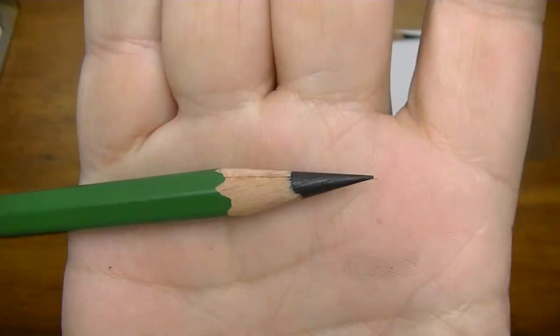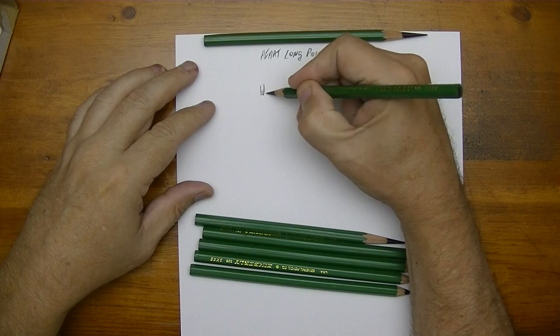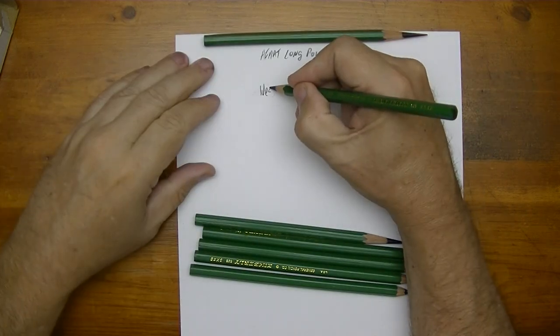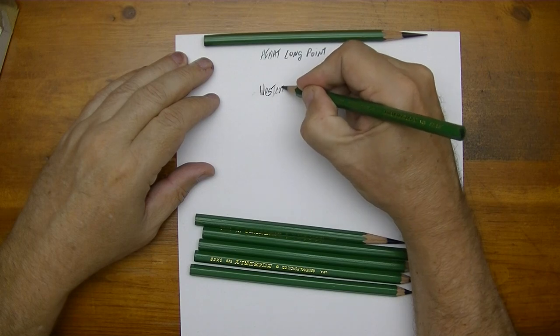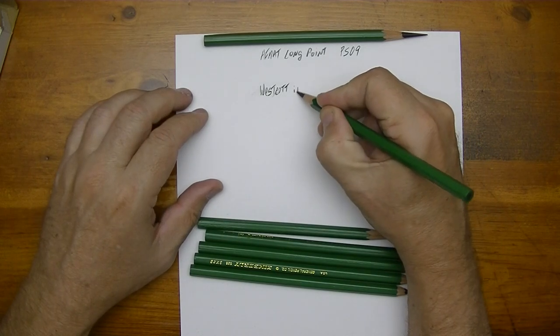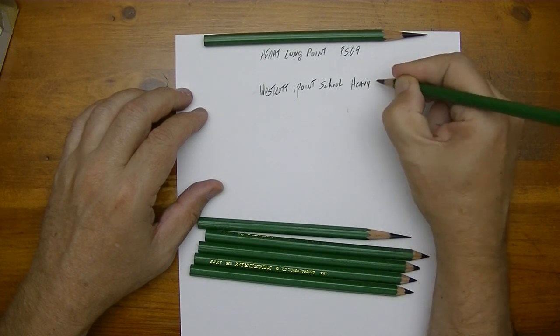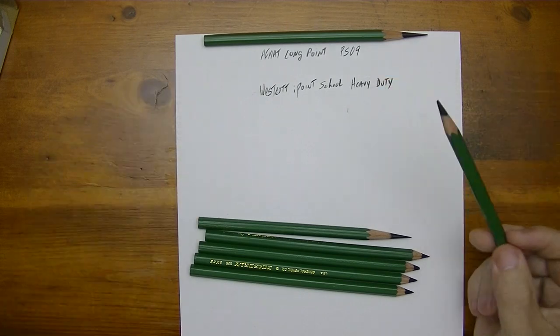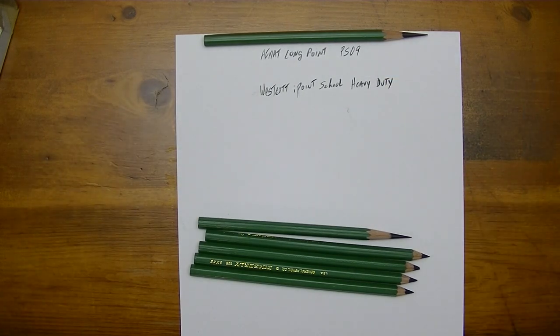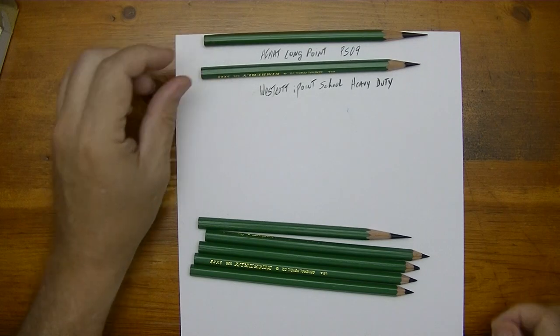It's a decent point, I like it. It's not as long as that one but it's pretty decent. So we're going to write down here this is the Westcott. Whoops, I broke my tip, that's what happens with these long points. This is the Westcott, and let me get the rest of the details here. iPoint school heavy duty. And I broke the tip so I got to go sharpen it again. Okay, so that's our second one here. It's not as long but it's a pretty decent point.